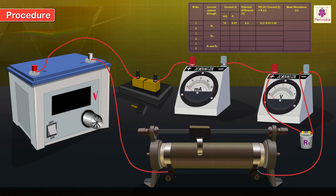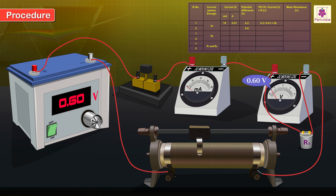Procedure: Obtain one more set of readings by applying a different value of PD, say 0.6 volts.